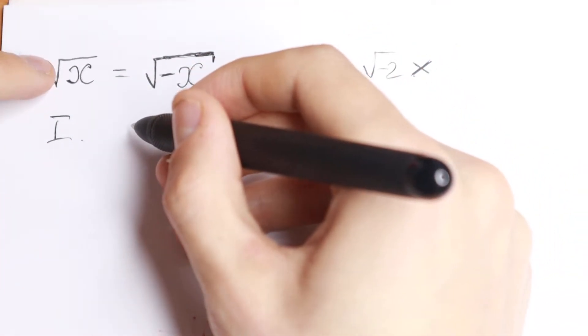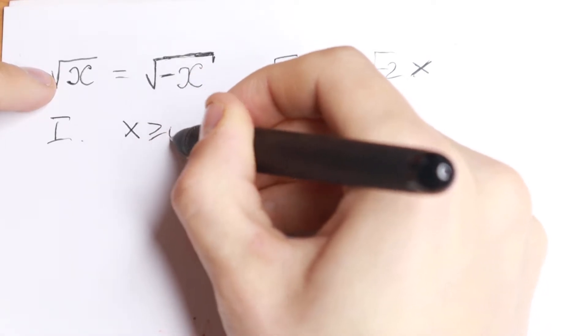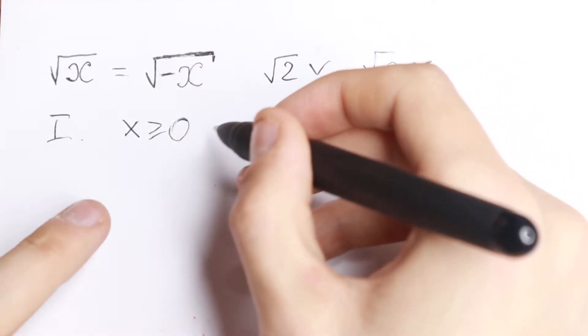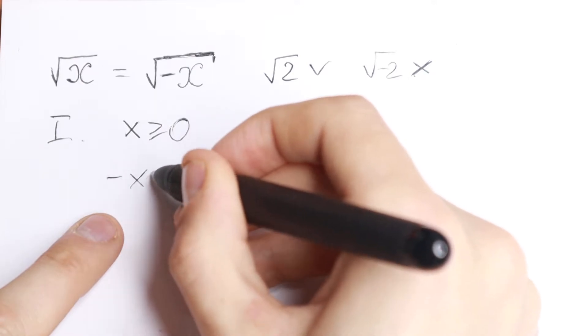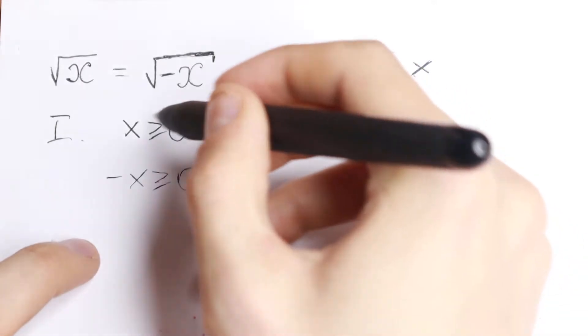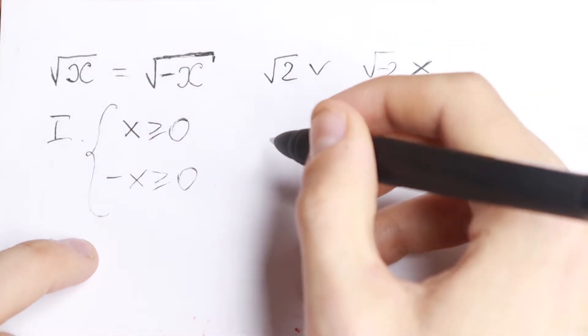Let's write that x is greater than or equal to zero, and minus x is also greater than or equal to zero. We need to solve this system.